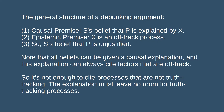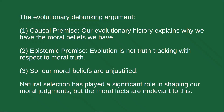In metaethics there is a popular kind of debunking argument: the evolutionary debunking argument. Kahane summarises it as follows. We have the causal premise: our evolutionary history explains why we have the moral beliefs we have. We have the epistemic premise: evolution is not truth-tracking with respect to the moral facts. Therefore our moral beliefs are not justified.